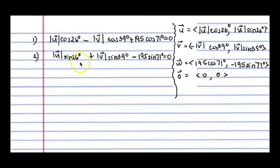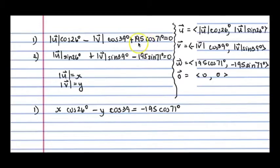So we want to solve for the magnitude of u and the magnitude of v. So what I'll do is I'll let magnitude of u represent x, and the magnitude of v represent y. So my equations will then become x cosine of 26 minus y cosine of 39 is going to equal negative 195 cosine of 71 degrees. And so notice here that I've added the opposite of 195 cosine of 71 to the other side. So that's what I've written here. For equation two, I'll have x sine of 26 plus y sine of 39 is going to equal 195 sine of 71 degrees.